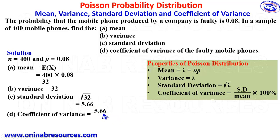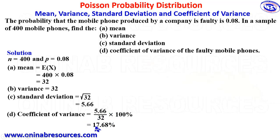Finally, the coefficient of variance is the standard deviation, 5.66, divided by the mean, 32, then multiplied by 100 percent. Putting this into our calculator gives a coefficient of variance of 17.68 percent. That's the complete solution. Thank you for watching — please like, share, and subscribe to our YouTube channel. Goodbye.